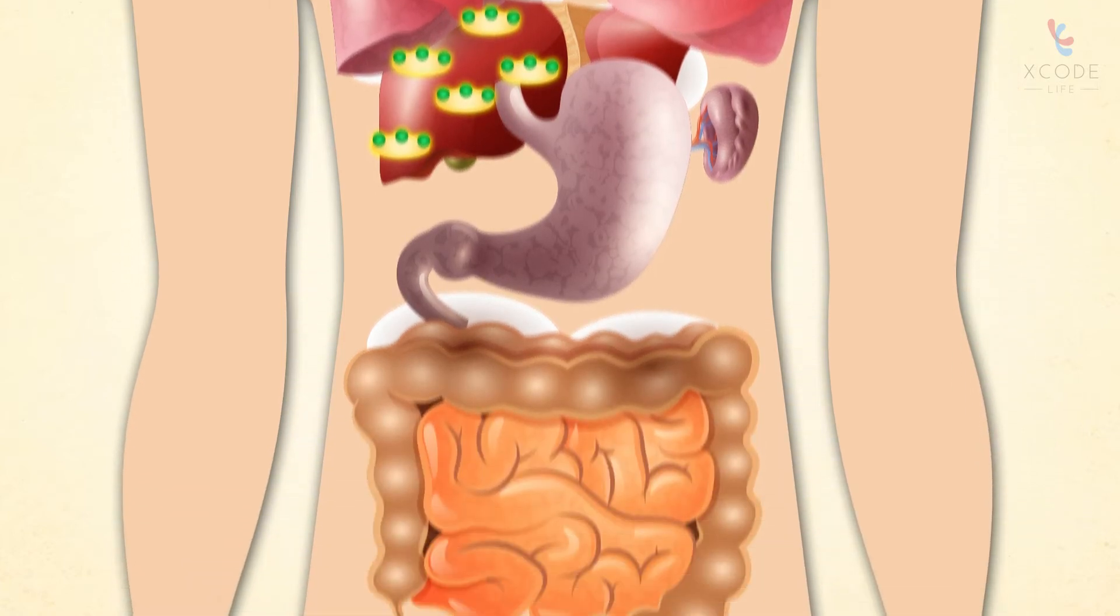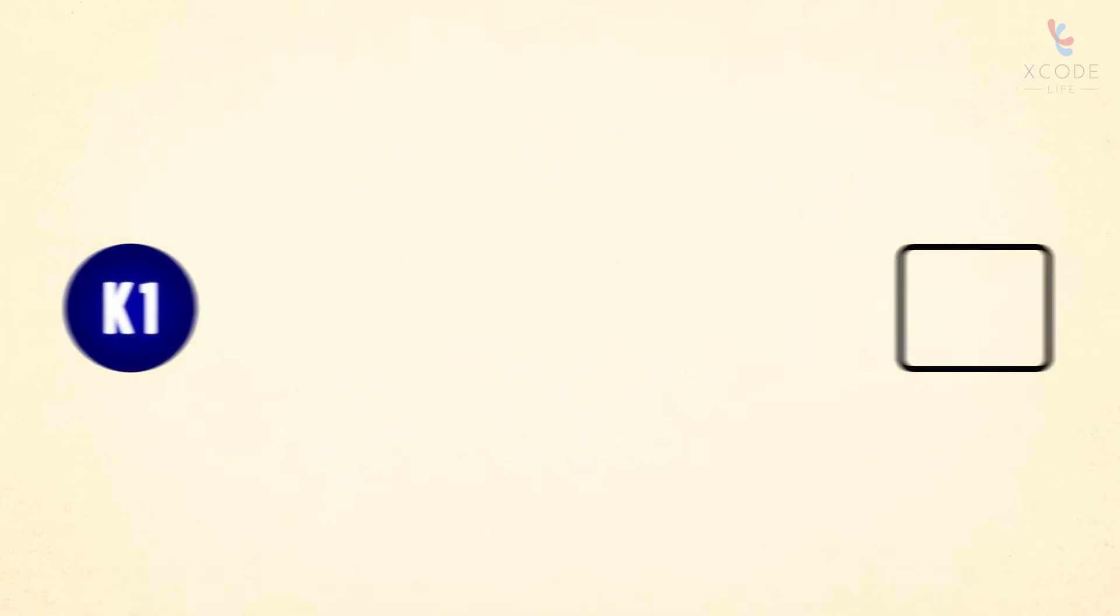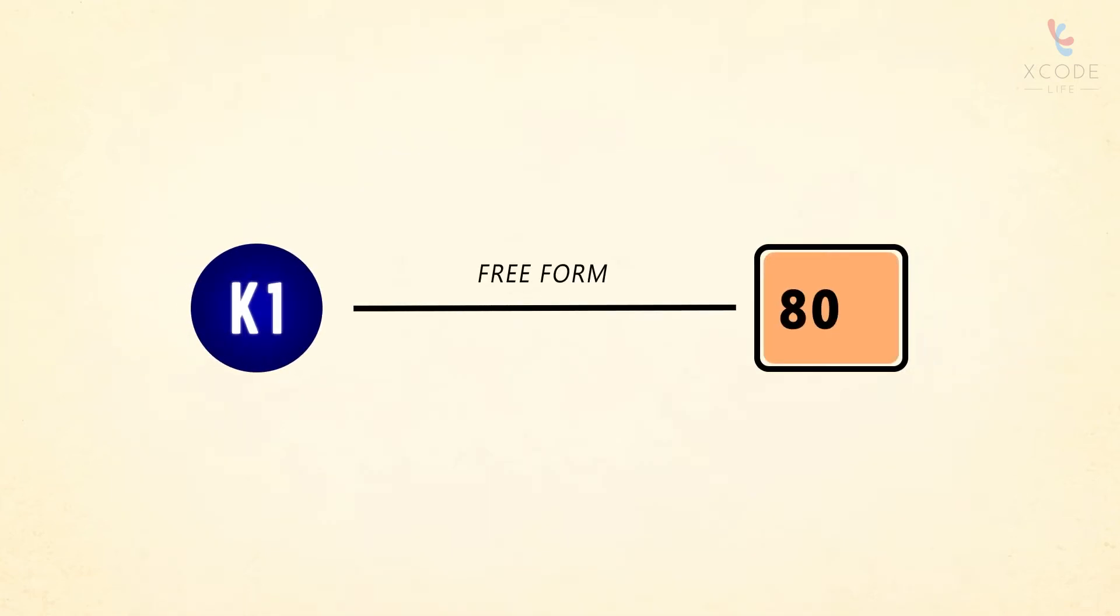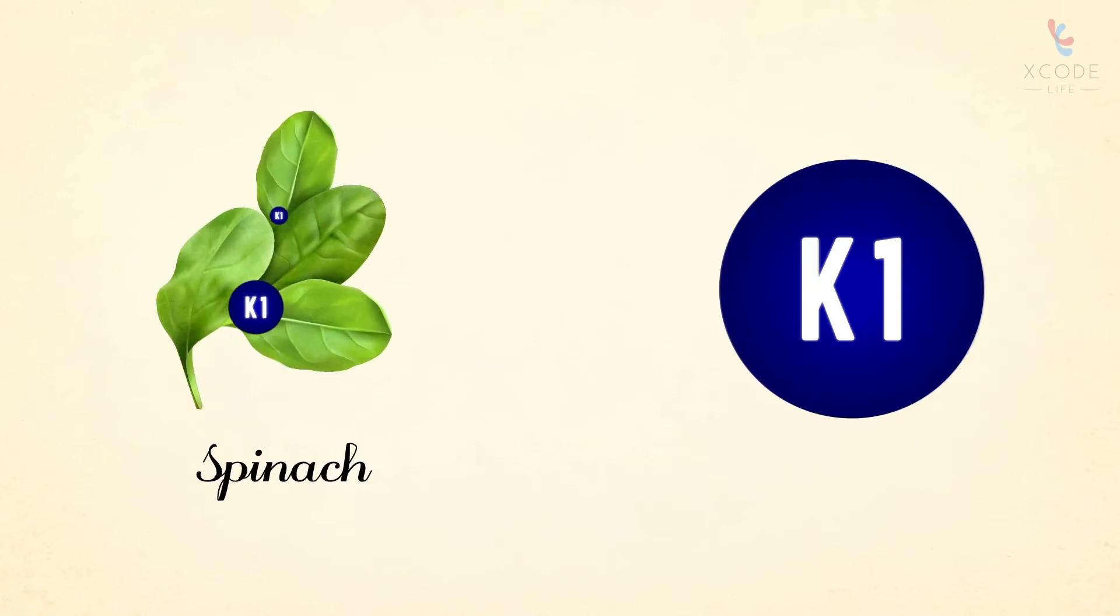The absorption occurs in the small intestine. The absorption rate of vitamin K1 in its free form is around 80 percent. However, depending on the dietary source, this value can vary. For example, K1 absorbed from spinach is only 4 to 17 percent of what is absorbed from a supplement.